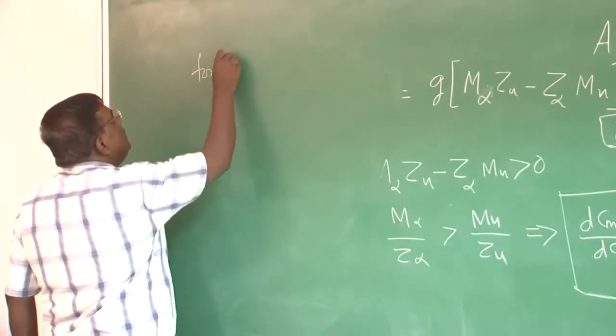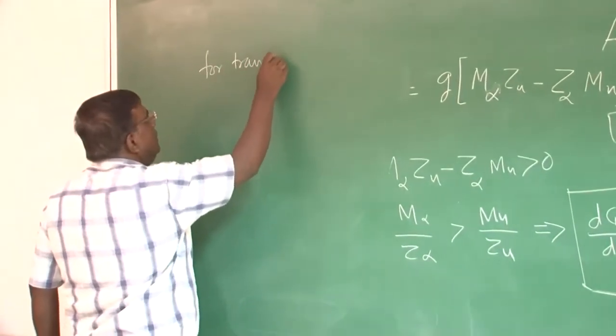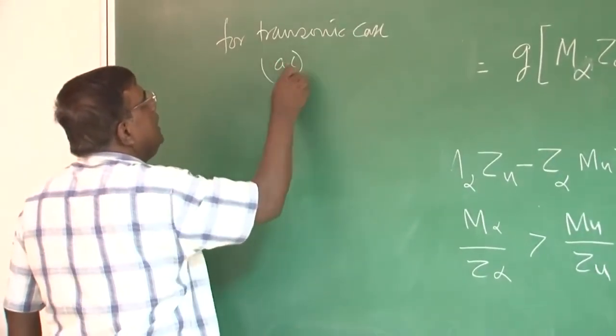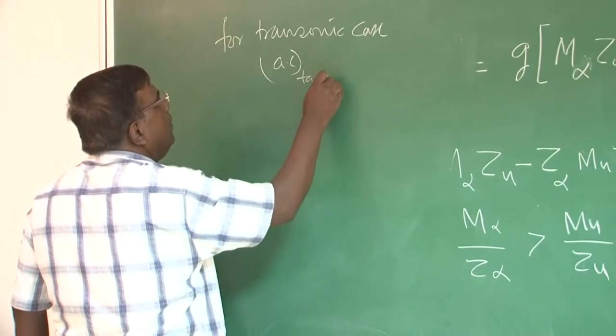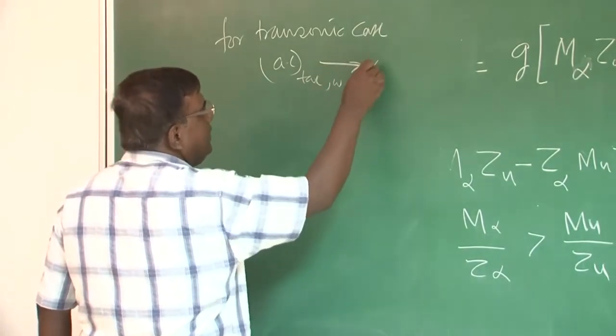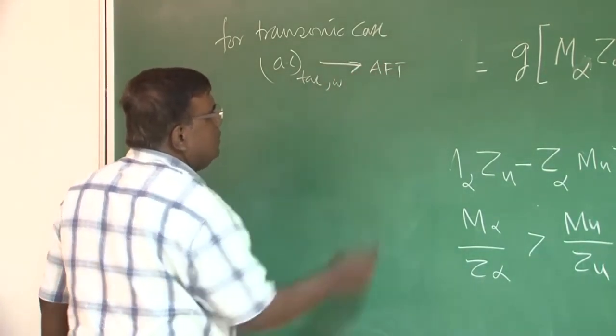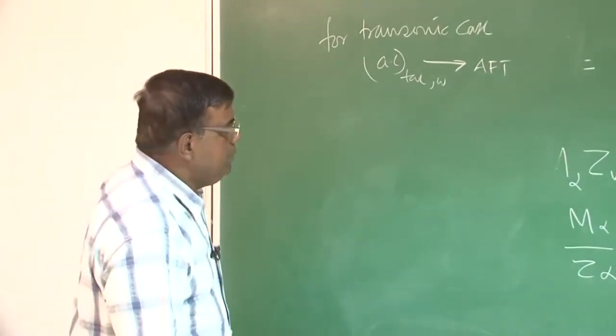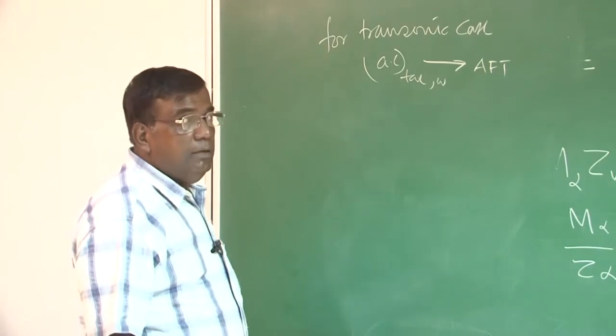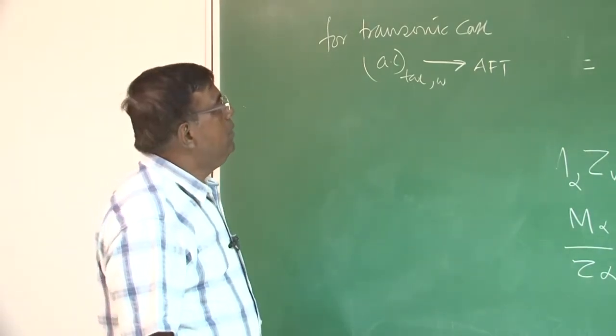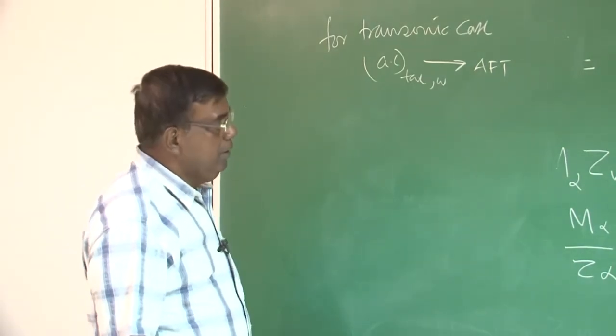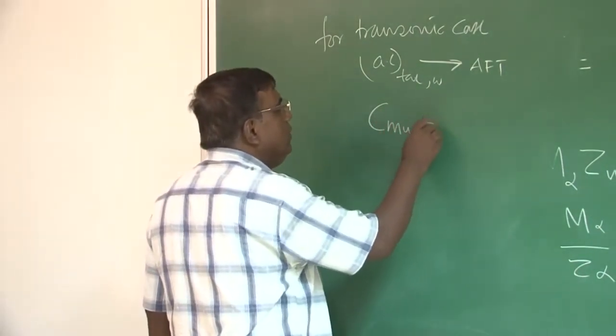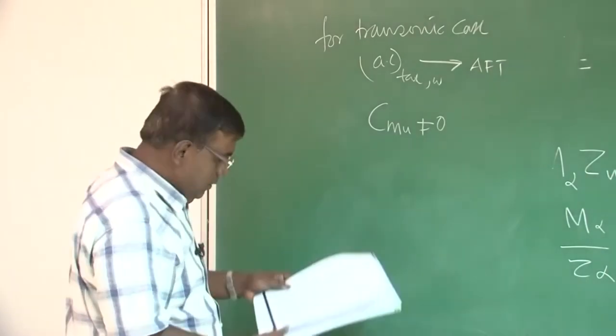For transonic, a case where AC of the tail or wing moves aft, tail arm is there, so nose down moment comes, tuck under comes, we call tuck under phenomena. A lot of aircraft we used to lose because we could not identify this phenomena. So C_m_u in such case is not equal to 0, then what happens? So let us take an example.